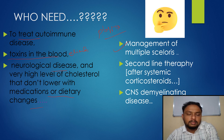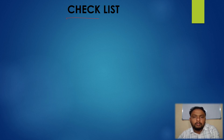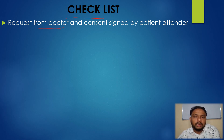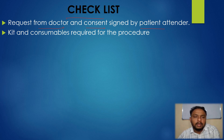Before the procedure, what are the things to be kept ready? First, you need a request from a doctor for the patient. Then get consent signed by the attendant — that is very important. Consent signed and a request from a doctor are both very important. Next, the kit and consumables required for the procedure should be kept ready at the bedside.